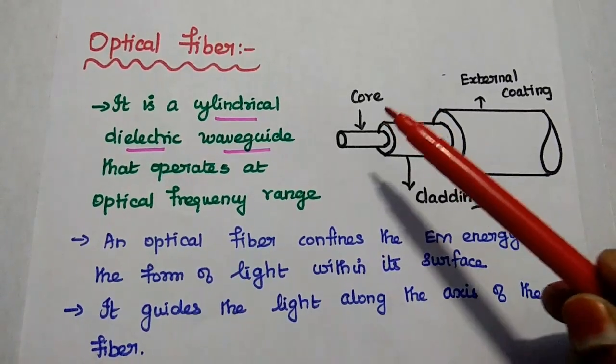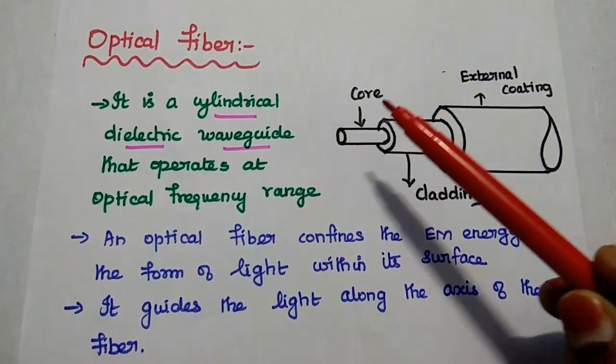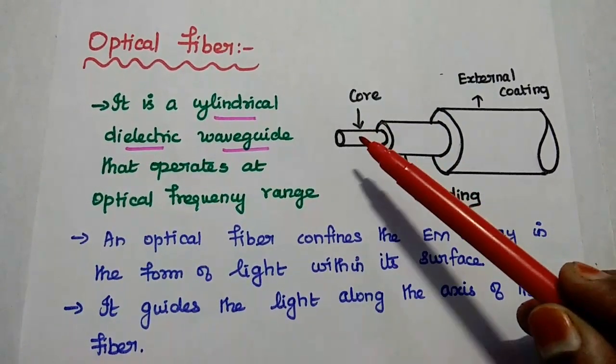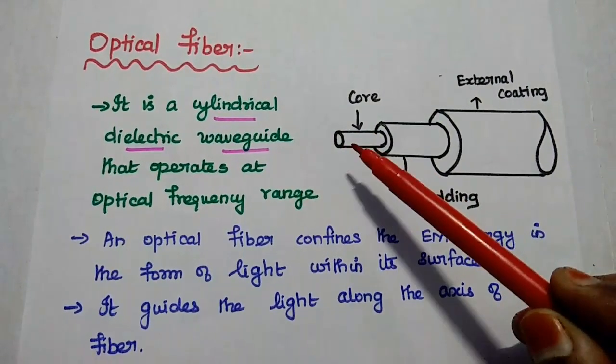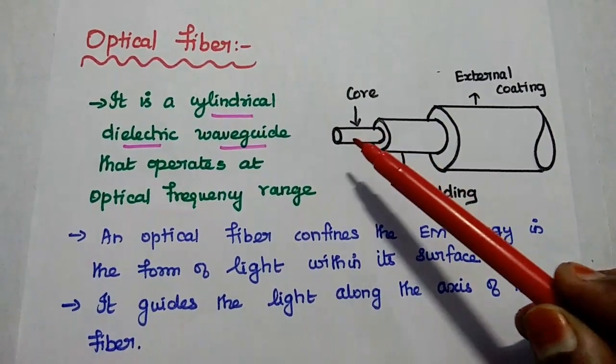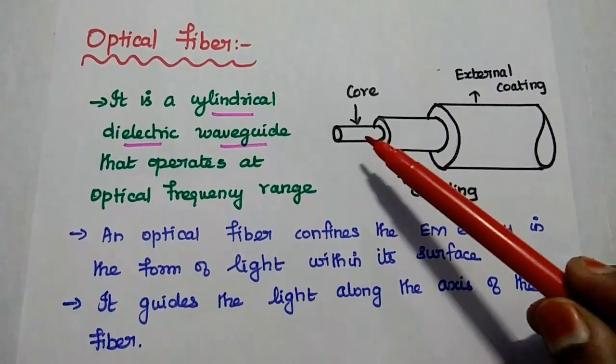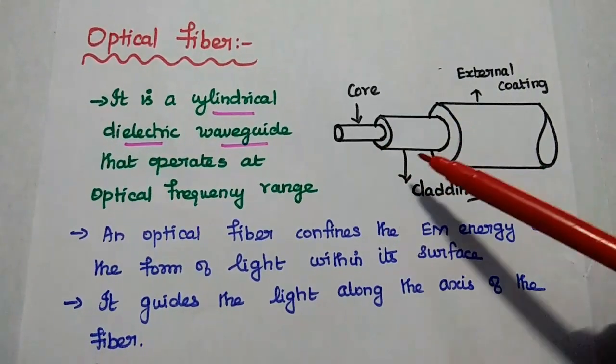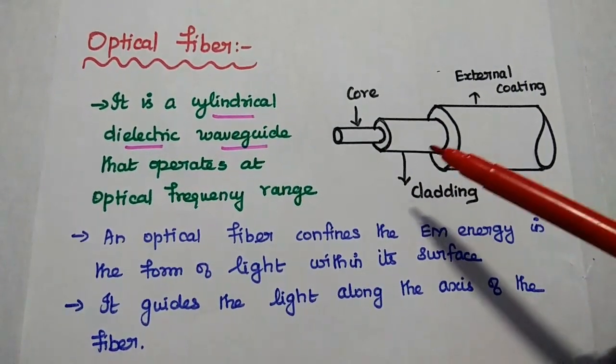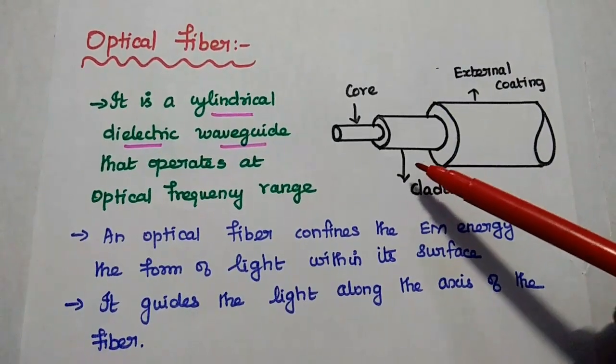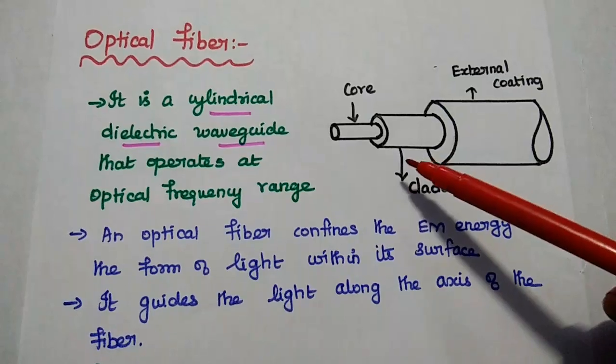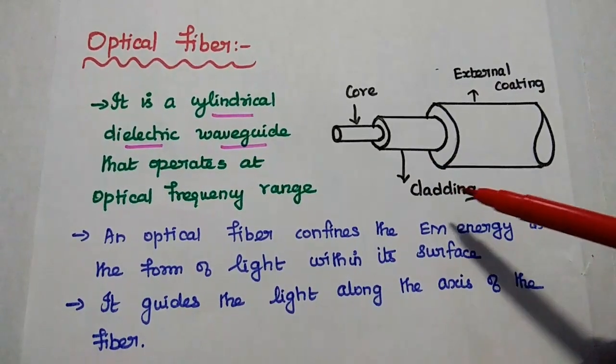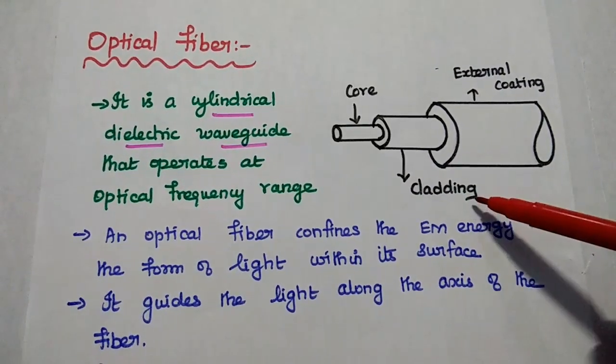Core is the single solid dielectric cylinder through which we can transmit the optical signal. Here it can be a pure silica material SiO2. The next layer is cladding. This layer is mainly used to protect the core and also reduce the scattering loss. This can be a glass material.